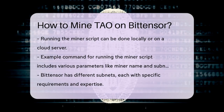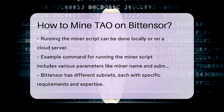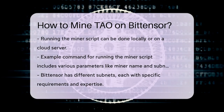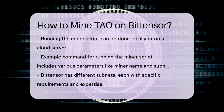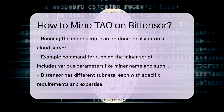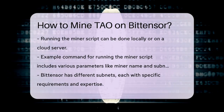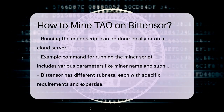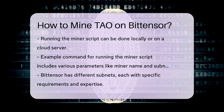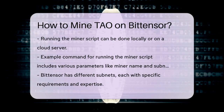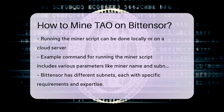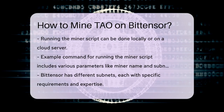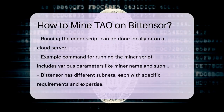Joining a subnet. Bittensor has various subnets, each requiring different types of expertise and hardware. For instance, the storage subnet needs high bandwidth and storage capacity, while the AI subnets require strong AI knowledge. Choose a subnet that matches your capabilities and interests.